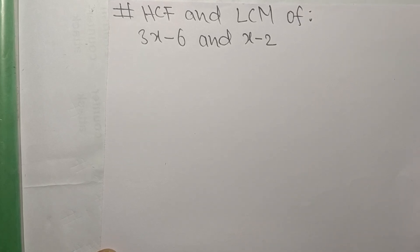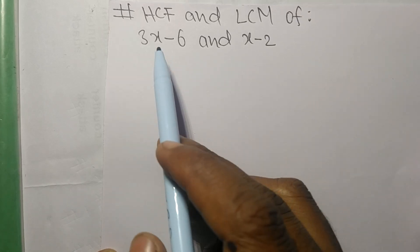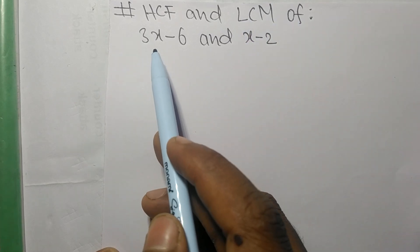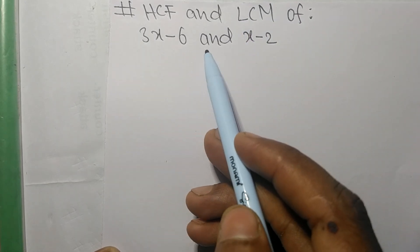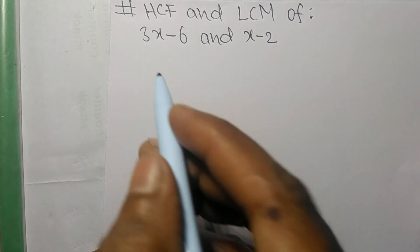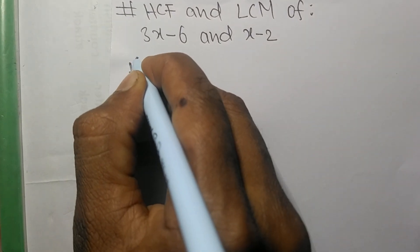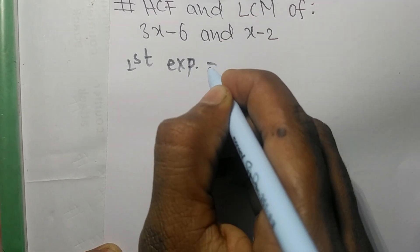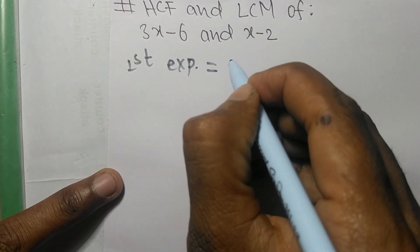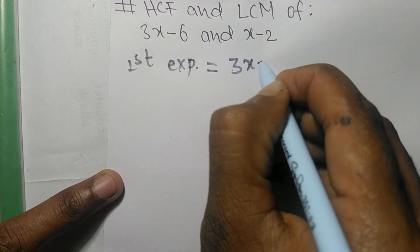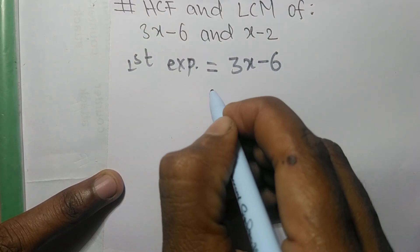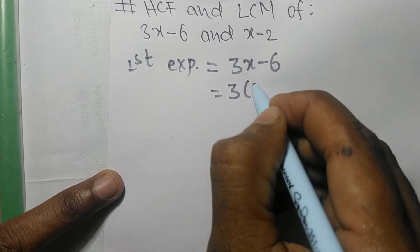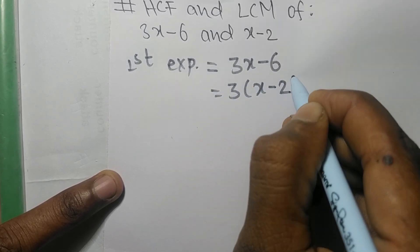Today in this video we shall find the HCF and LCM of (3x - 6) and (x - 2). The first expression is 3x - 6. The common factor here is 3, so we can write it as 3 times (x - 2).